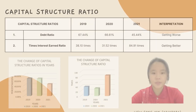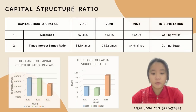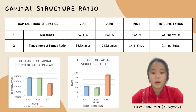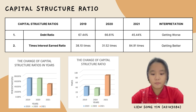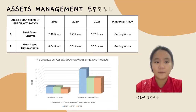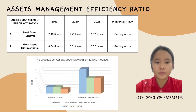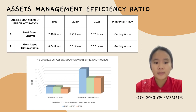Next is capital structure ratio. The debt ratio decreased from 67.44% in 2019 to 45.44% in 2021. Next is times interest earned ratio — in 2019 it was 38.10 times, decreased to 31.52 times in 2020, and increased to 84.91 times in 2021. Continuing with asset management efficiency ratio in Dutch Lady, total asset turnover and fixed asset turnover ratio decreased from 2019 to 2021.